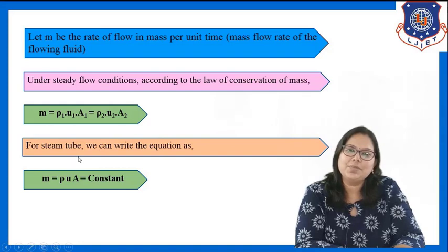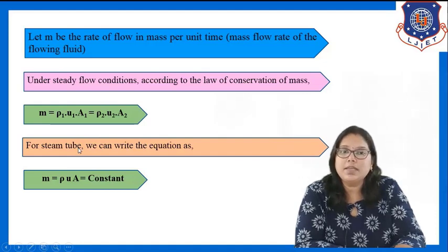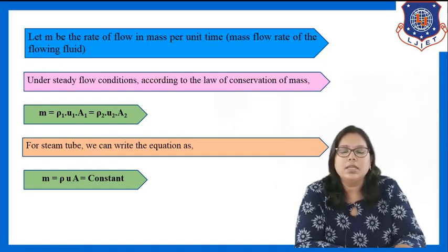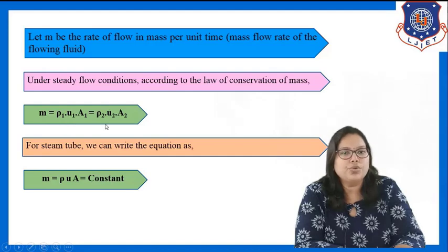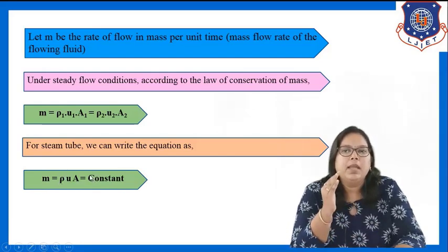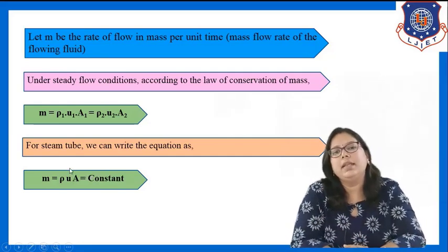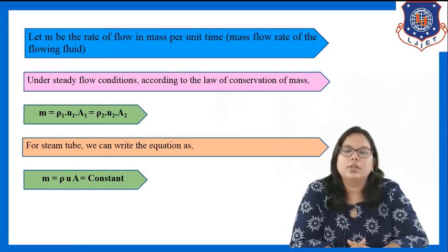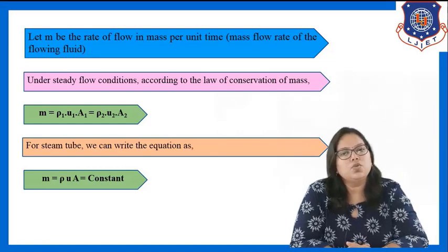For a stream tube — a tube of any cross section entirely bounded by streamlines — velocity at any point is constant. So in place of ρ1·u1·A1 = ρ2·u2·A2, I can write M = ρ·u·A = constant, since density, velocity, and area are all constant. This is the equation of continuity for a stream tube.